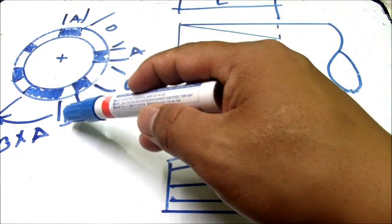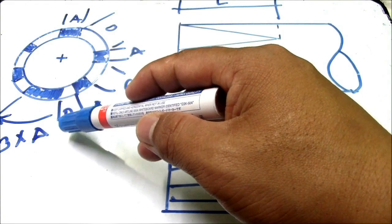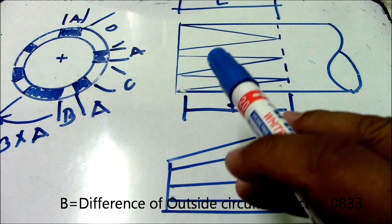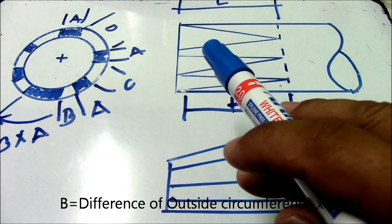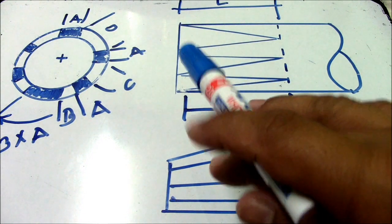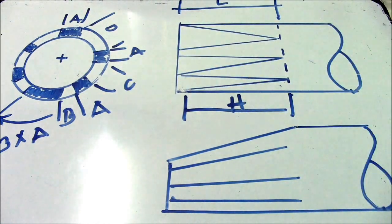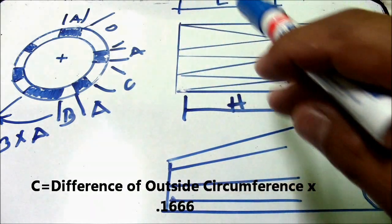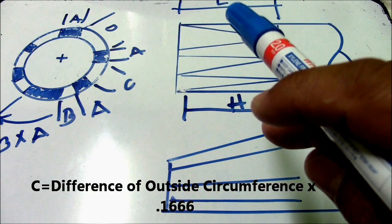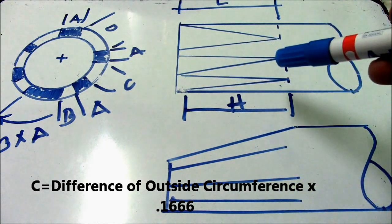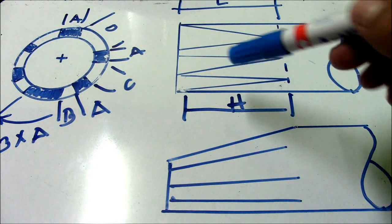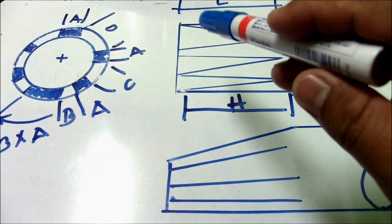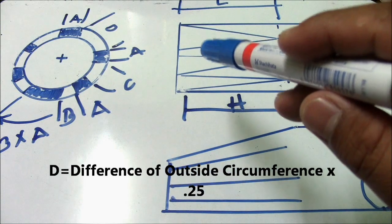Next, letter B: to find dimension B, take the difference of the outside circumferences multiplied by 0.0833. Next, dimension letter C: to find C, the difference of outside circumferences multiplied by 0.1666. Next, letter D: the difference of outside circumferences multiplied by 0.25.